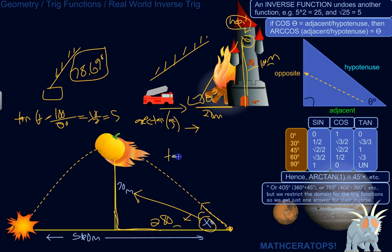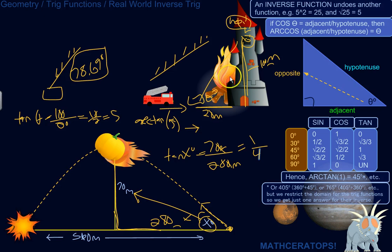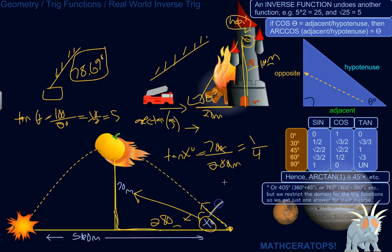So we know that the tangent of x degrees is 70 meters over 280, which we can reduce to 7 over 28, which is one-fourth. So let's take the arc tangent of one-fourth. Arc tangent of one-fourth is about 14 degrees. So that's about 14 degrees.